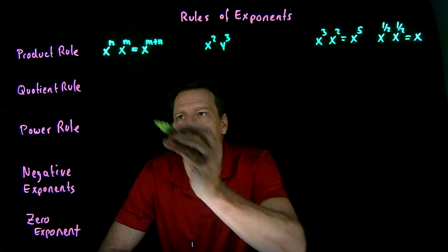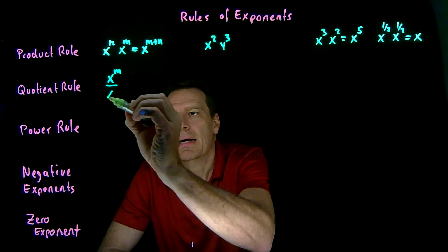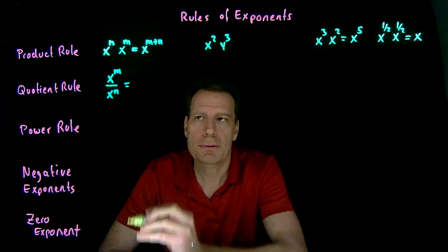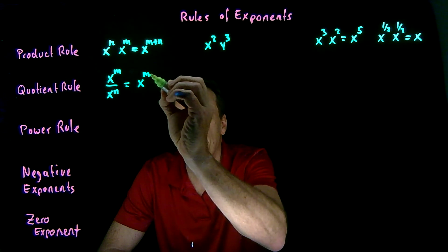The quotient rule is about division, so if you take x to the m and divide it by x to the n, then you need to subtract the exponents. So that's going to be equal to x to the m minus n.